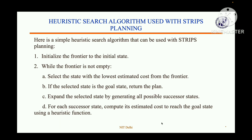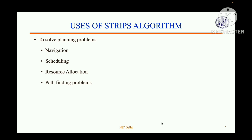We choose the option with the lowest estimated cost to the goal. If that option is the goal, we return the plan. Otherwise, we expand the chosen option by creating all possible next options. For each option, we calculate the estimated cost to reach the goal and add these new options to the list of potential options if they haven't already been visited. If no plan is found and no options remain, the algorithm returns failure.